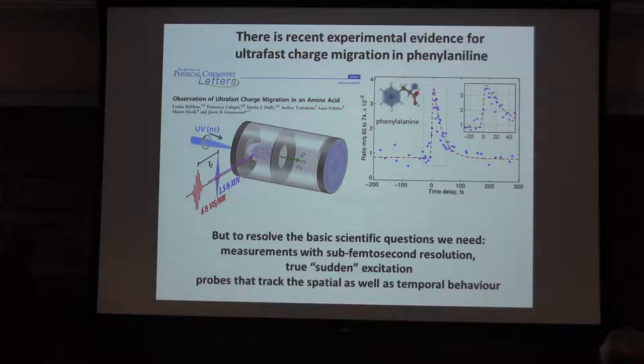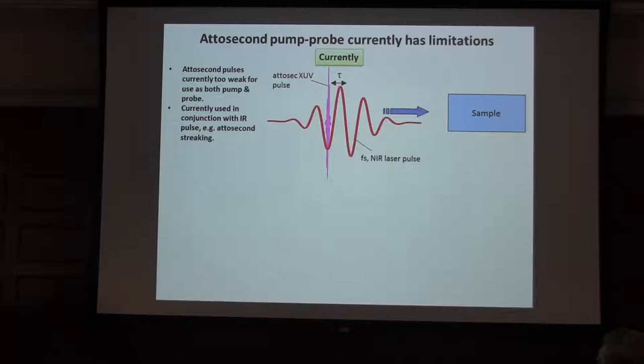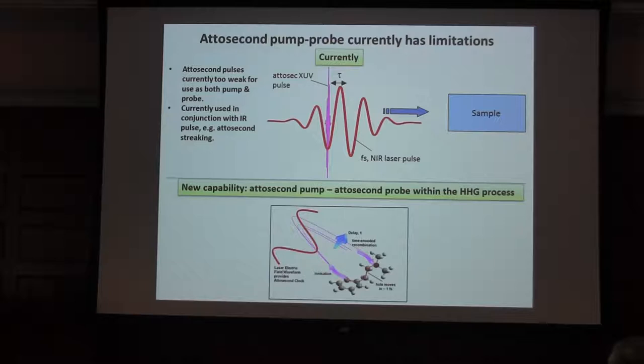Attosecond pump probe has its limitations. In particular, despite what Katsumi has done where he can generate two powerful XUV pulses, in general, this is very hard to do. We know the photoionization cross-sections are pretty low, so most people up to now have resorted to the scheme where you have an attosecond pulse crossed with an infrared laser pulse.